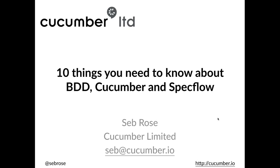The webinar is presented by Seb Rose, partner at Cucumber Limited. Seb has been involved in the full development life cycle with experience ranging from architecture to support. He's a partner in Cucumber Limited, who help teams adopt and refine their agile practices with a particular focus on collaboration and automated testing. He is also a regular speaker at conferences and occasional contributor to software journals, contributing author to 97 Things Every Programmer Should Know, O'Reilly, and lead author of the Cucumber for Java book, Pragmatic Developers.